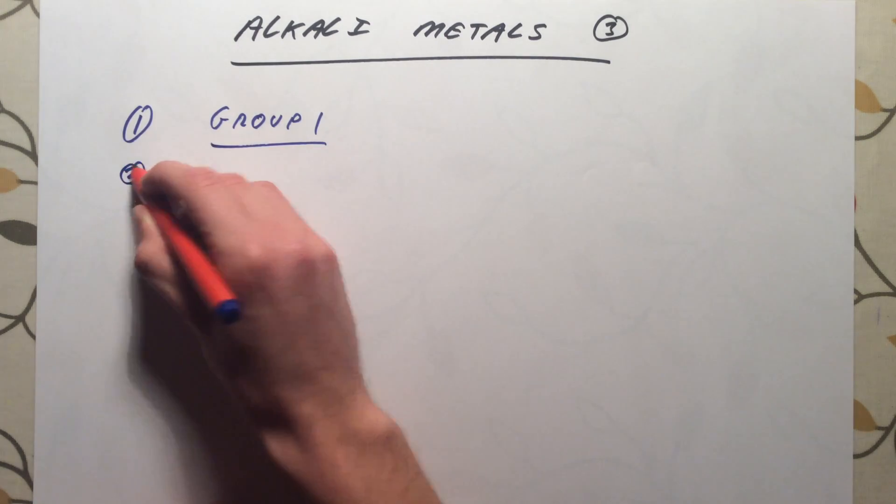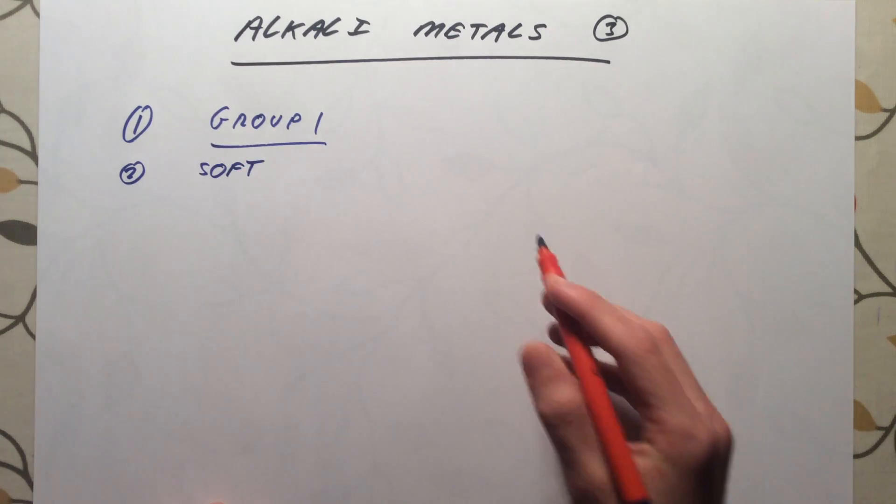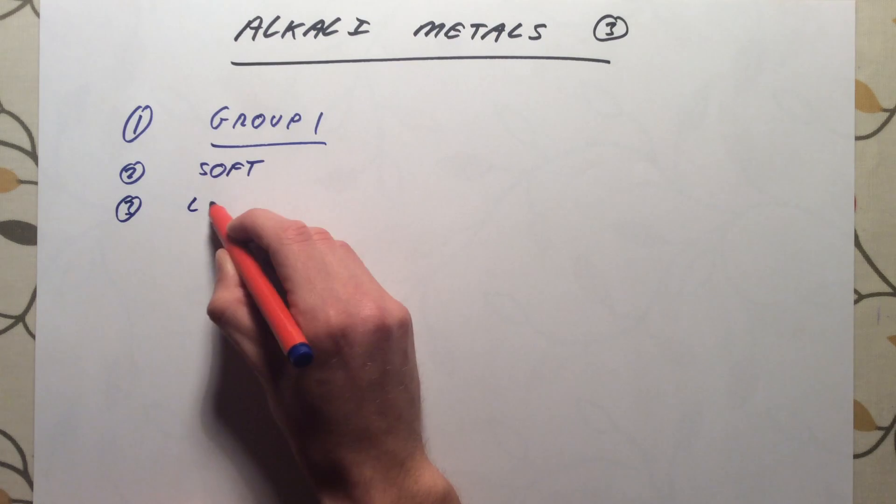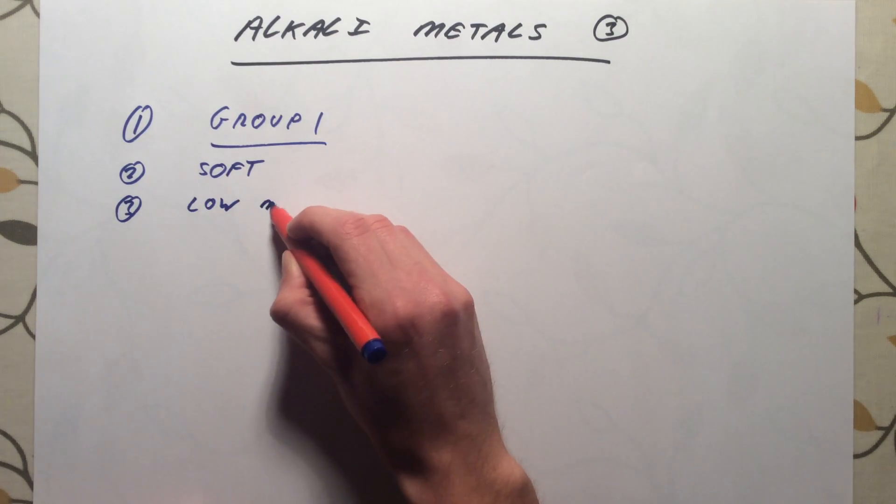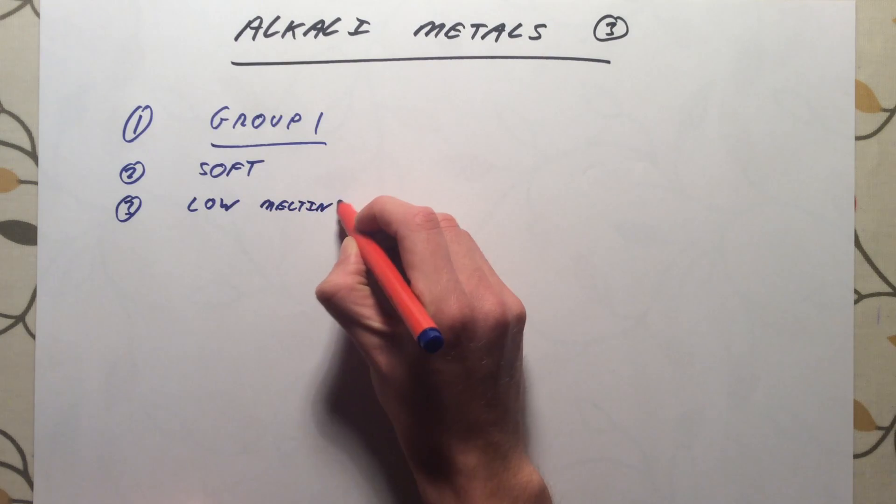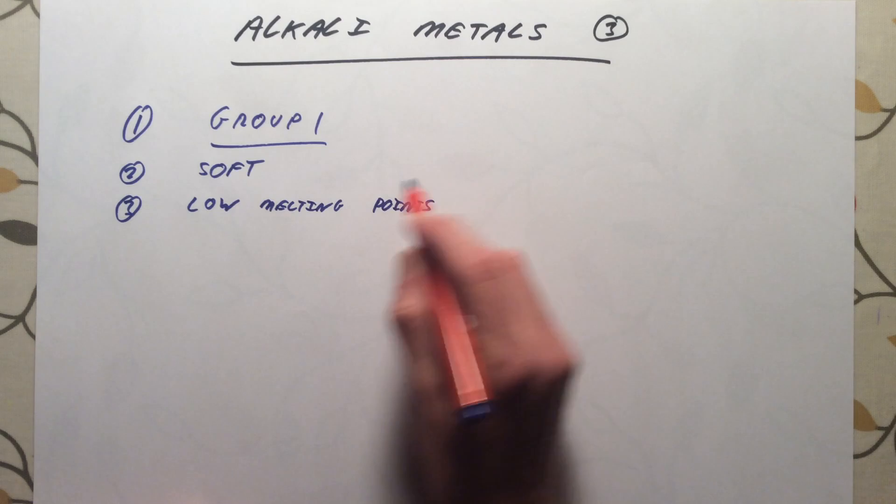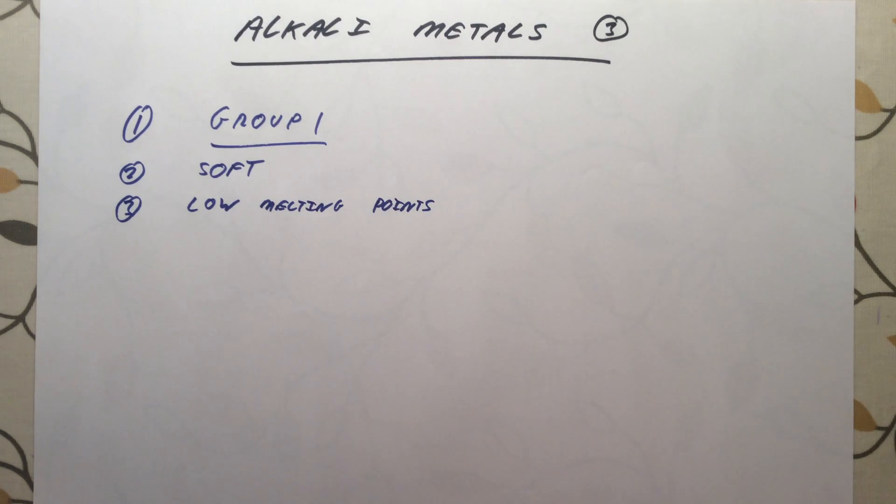They are all very soft metals. In fact, they're so soft that we can cut them all just with a sharp knife. They also have a very low melting point compared to most metals. So they are solids at room temperature, but we don't need to provide much heat to actually melt them.